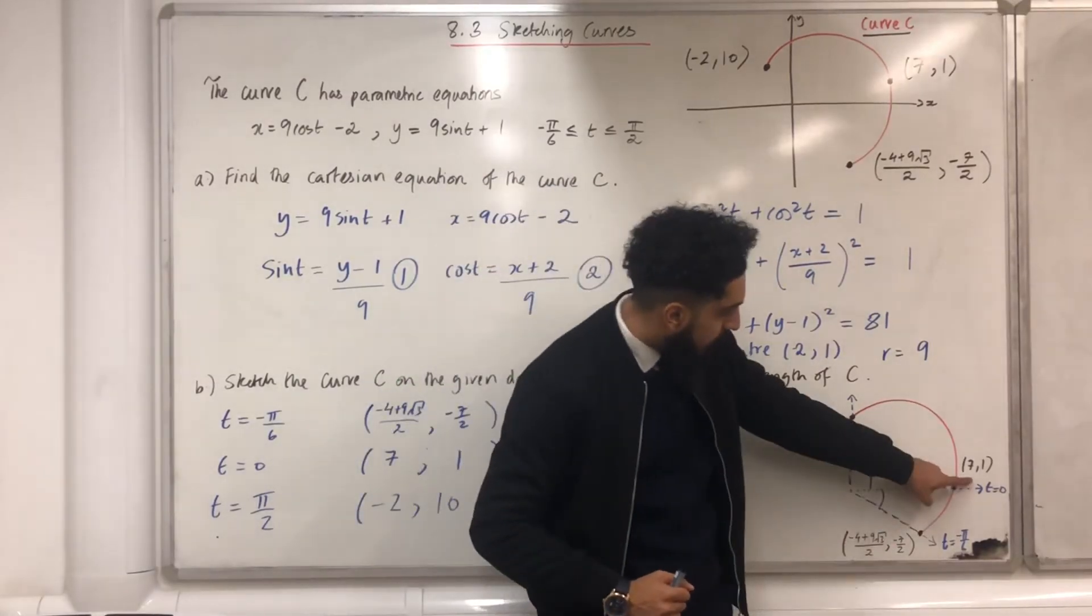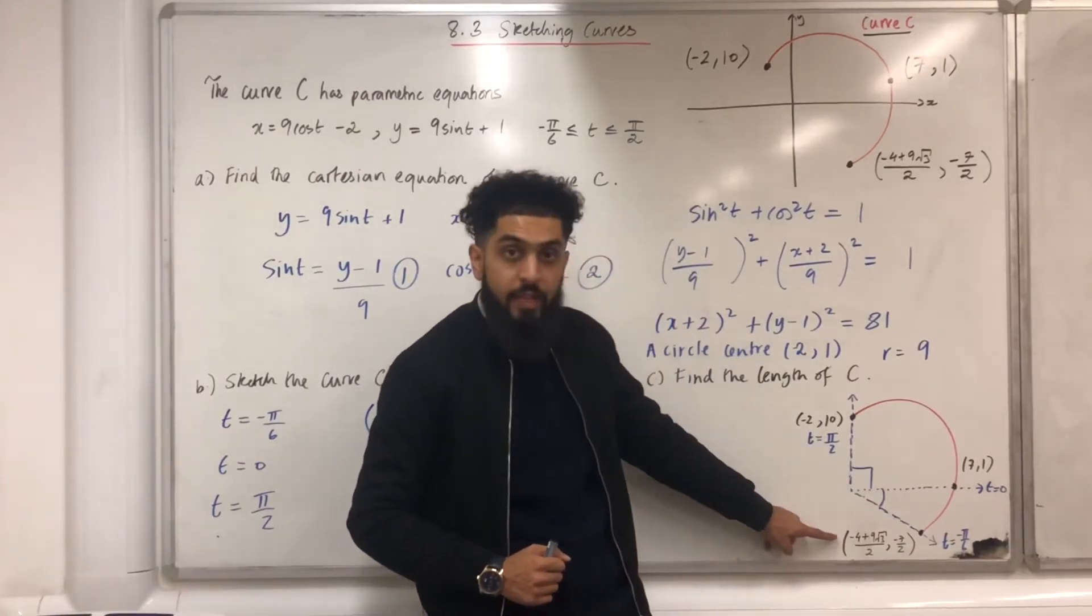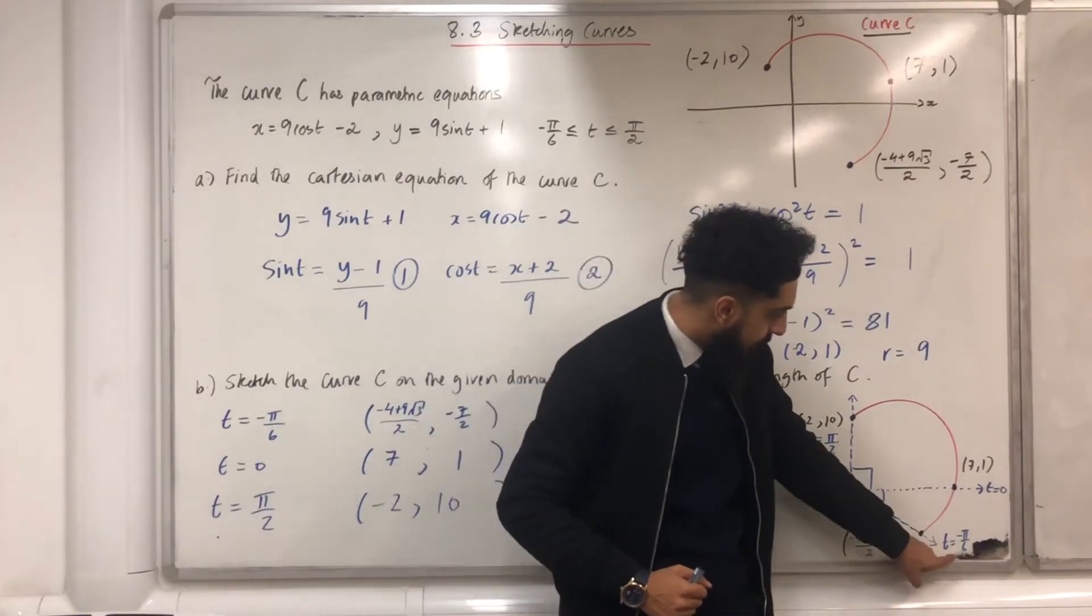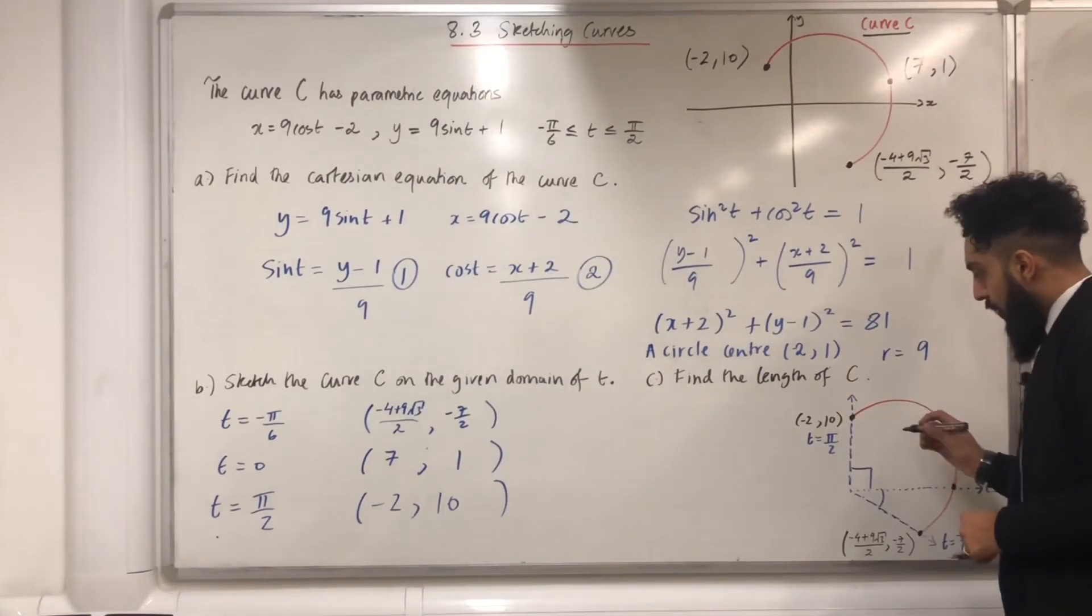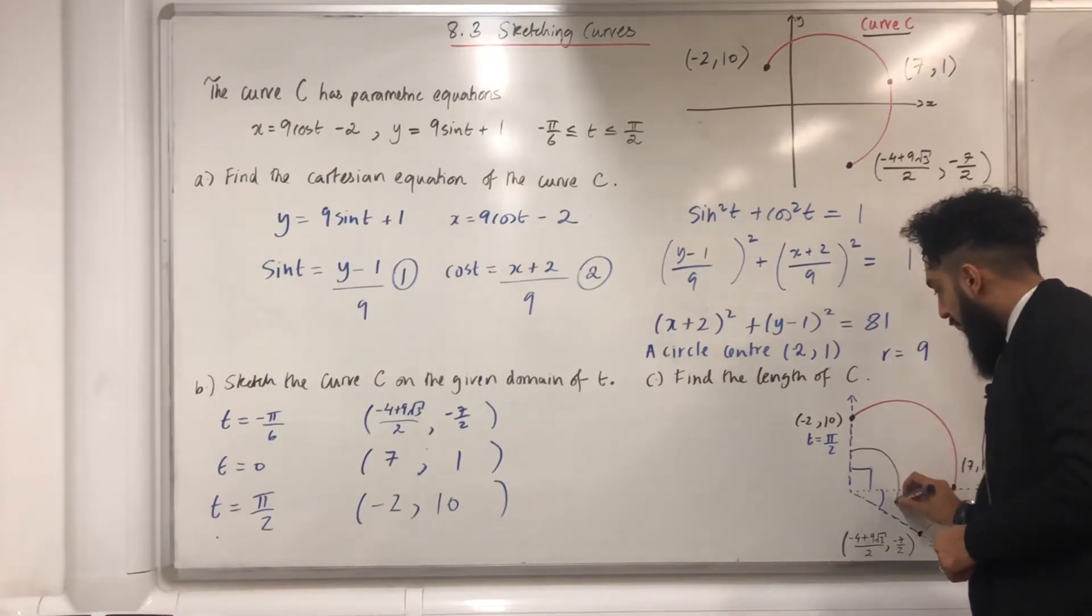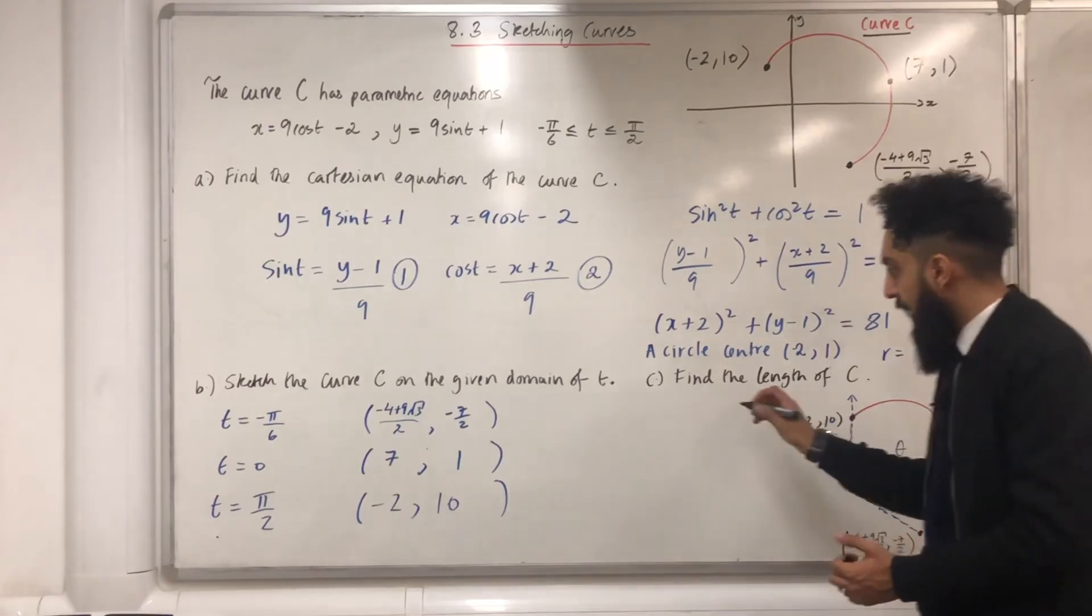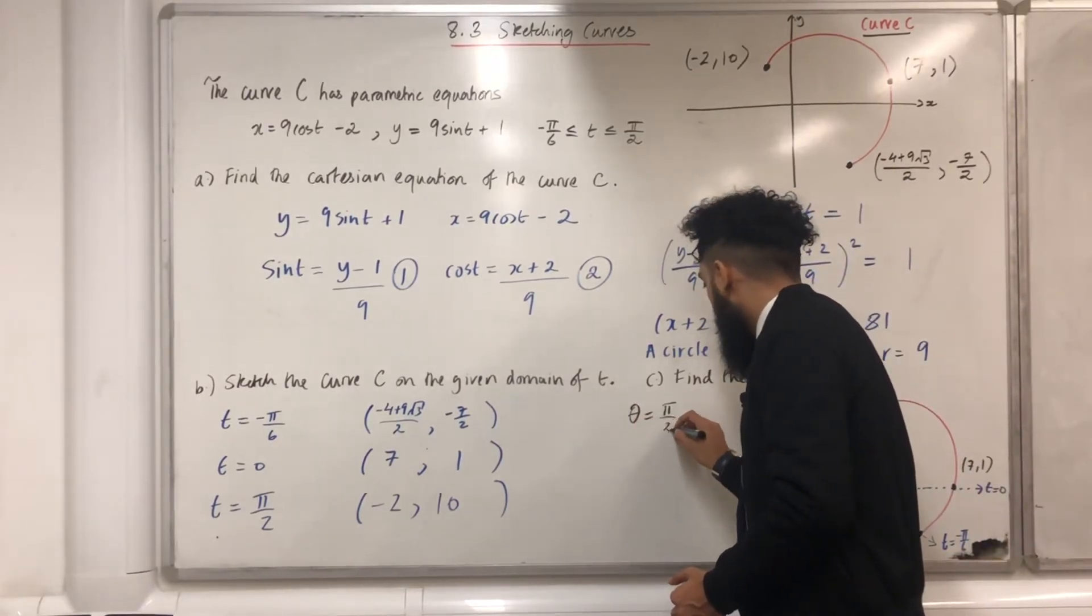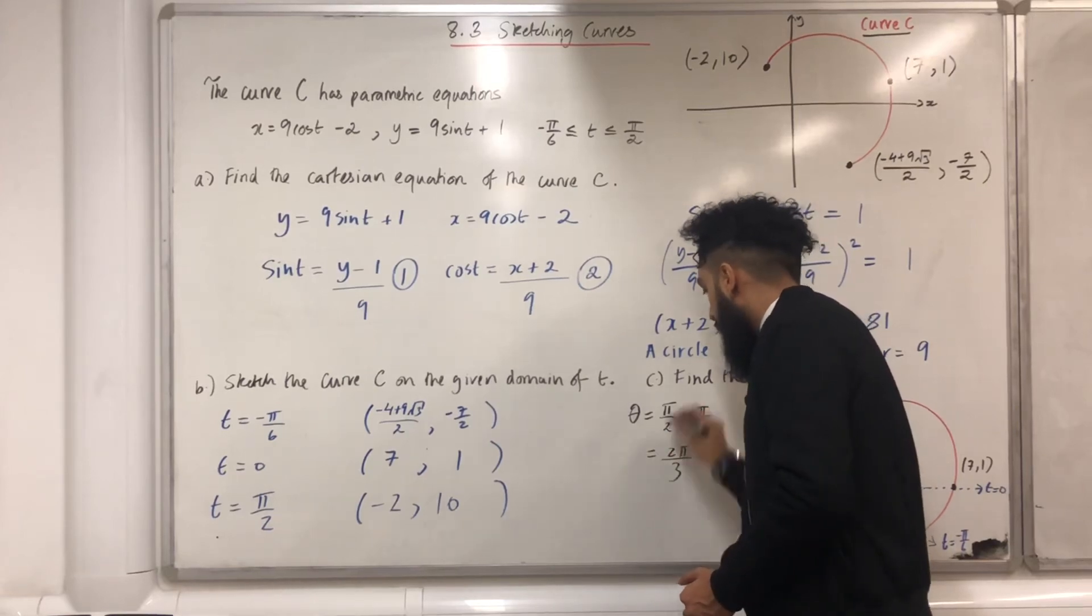At this point over here, 7, 1, t is equal to 0. At this point over here, minus 4 plus 9 root 3 all over 2, minus 7 over 2, t is equal to minus pi over 6. Now if I want to actually calculate this theta over here, that angle, it would just be pi over 2 plus pi over 6, which is 2 pi over 3.